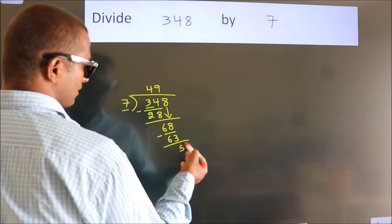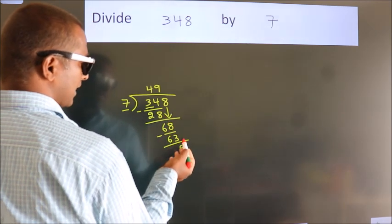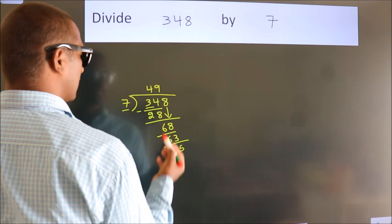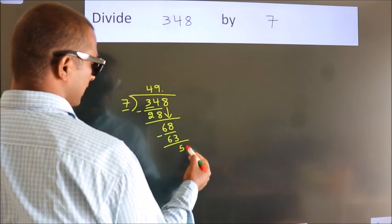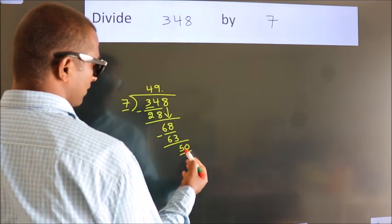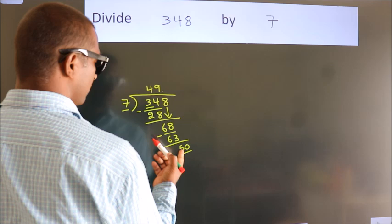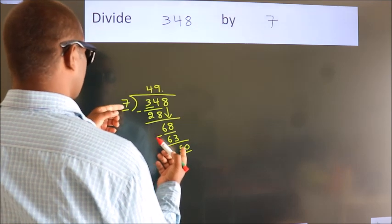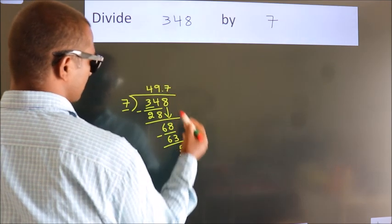After this, no more numbers to bring it down. So what we do is, we put dot, take 0. So 50. A number close to 50 in the 7 table is 7 sevens, 49.